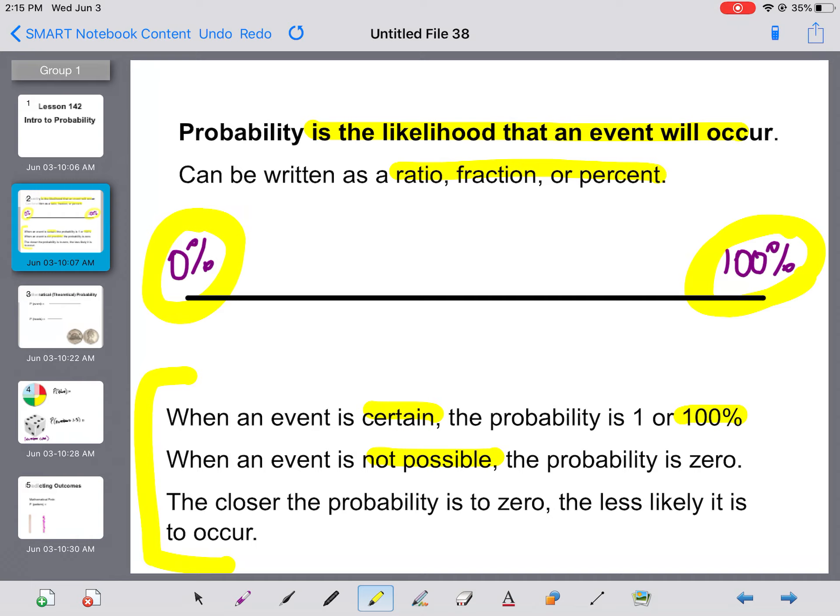And you will hear probabilities being used, especially if you like to check the weather. Weather forecasters will often use probabilities, and they'll use them as percentages. They'll say something like there's an 80 percent chance that it's going to rain tomorrow, or maybe it's only a 20 percent chance that it's going to rain. So if it's an 80 percent chance that it's going to rain, 80 percent is closer to 100. It's pretty likely that it's going to rain. However, if they only give you a 20 percent chance that it's going to rain, that's closer to zero, which means it is less likely to happen.